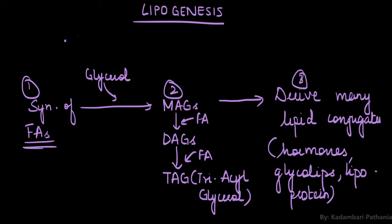Lipogenesis occurs in hepatocytes and adipocytes, specifically in the cytoplasm of these two cells in animals. For the synthesis of fatty acids, we need a raw material. The raw material for the synthesis of fatty acids is acetyl coenzyme A.